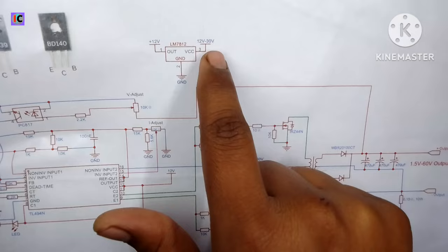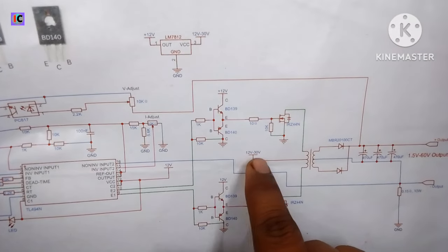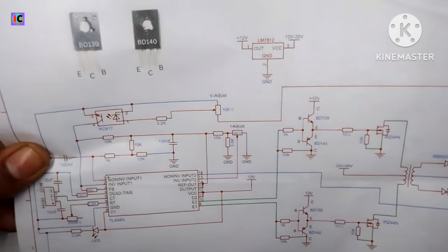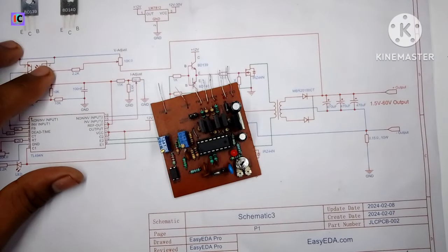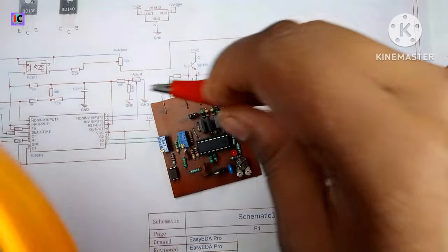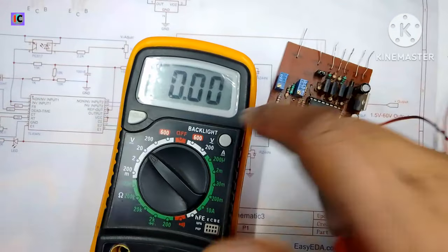The main component here is a 12 volt supply to this module which is done through the LM7812 voltage regulator IC. Make sure we have selected the right pins of the BD139 and BD140 transistors.